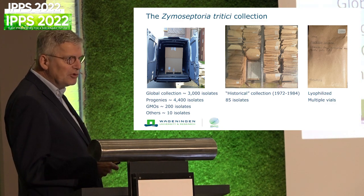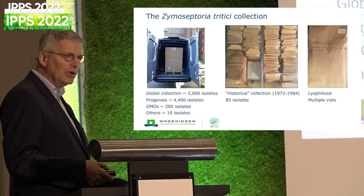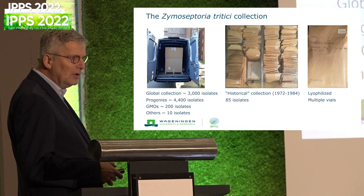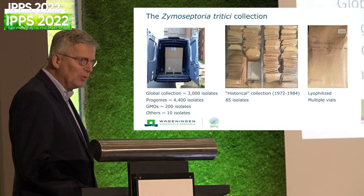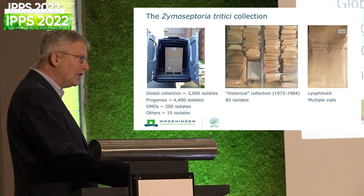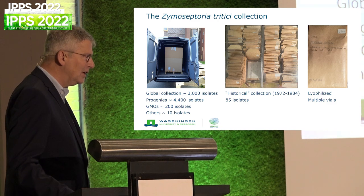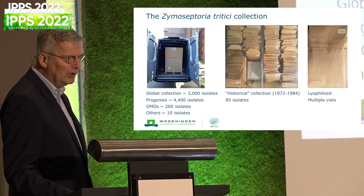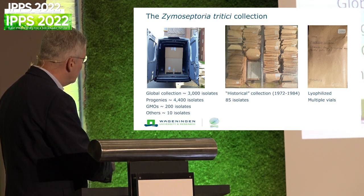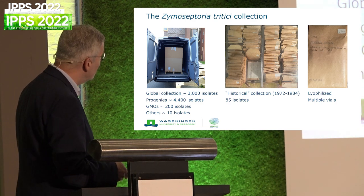Over time in Zymoseptoria research, we collected close to 8,000 isolates. These were all in Wageningen and are now in the University of Kiel in Germany. Many of these isolates have been genotyped. There was a time that phenotyping was the only thing we could do, because there was no genotyping. Then genotyping came in and phenotyping was considered old-fashioned. Fortunately, later we realized: we need both. We need phenotyping and genotyping to move forward. Many of these isolates have been phenotyped and genotyped and are now available to the community for future research.